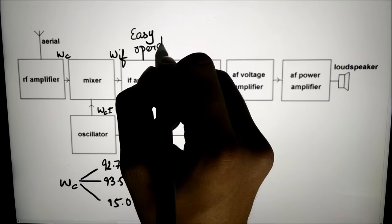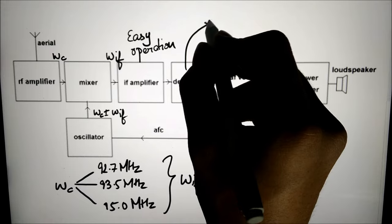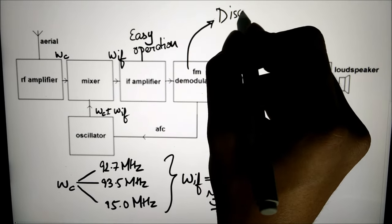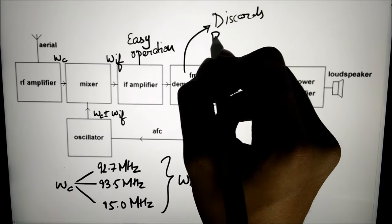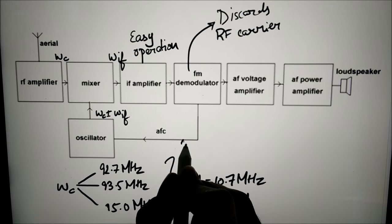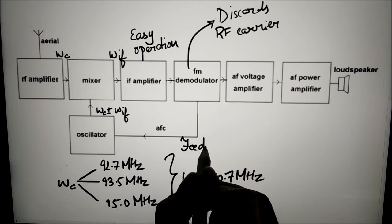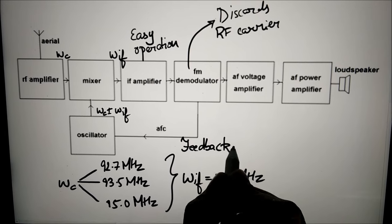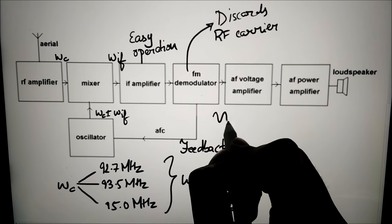The amplified IF signal is fed to the demodulator. This circuit recovers the audio signal and discards the RF carrier. Some of the audio is fed back to the oscillator as an automatic frequency control voltage. This ensures that the oscillator frequency is stable in spite of temperature changes.